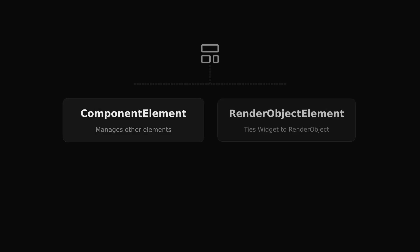Those blueprints get turned into one of two kinds of elements. Component elements, which manage the build cycle and can host other elements. Or render object elements, which connect to the underlying render object that issues the drawing commands on the screen.